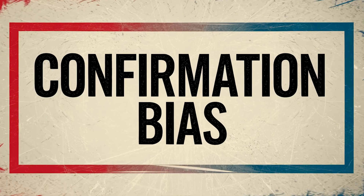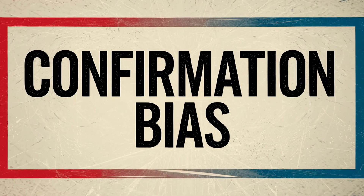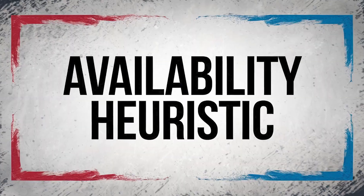Number five: the halo effect. This is when we let one positive impression of someone — like their friendliness or their attractiveness — influence unrelated judgments. For example, that car salesman was so nice, the car he's selling must be reliable. To avoid this, separate the person from the product or decision. Focus on the facts and not the charm.